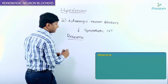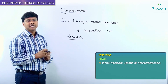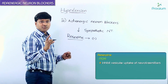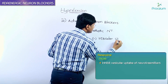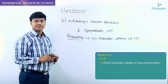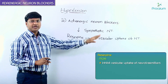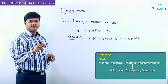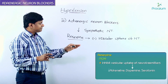Reserpine inhibits the vesicular uptake of the neurotransmitters. Once reserpine inhibits this vesicular uptake, that will cause the depletion of adrenaline, dopamine, and serotonin in the synaptic vesicles.